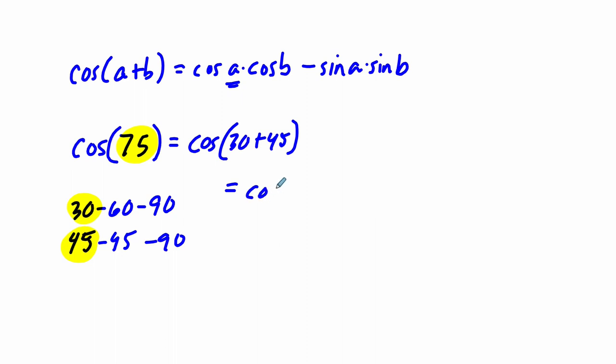which is 30, times the cosine of the second angle B, so we start with A and B, times the cosine of 45 minus the sine of the first angle, sine of A, times the sine of B, the second angle. So it's the sine of 30 times the sine of 45. So what this formula allows us to do is to break up an angle into special angles and then analyze those angles.